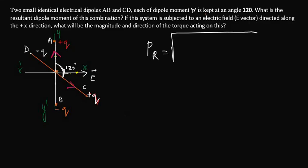PR will be equal to—dipole moment for each dipole is the same, it is P—so we can write down first vector squared plus the second vector squared plus 2 times the two vectors times cos of the angle between these two. In this diagram you can see the angle between the two dipoles is 120 degrees.